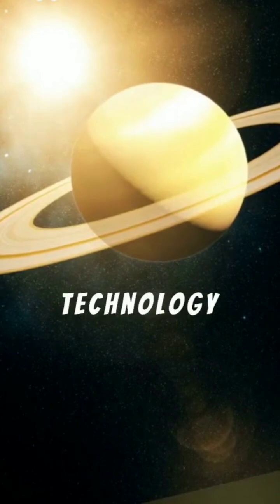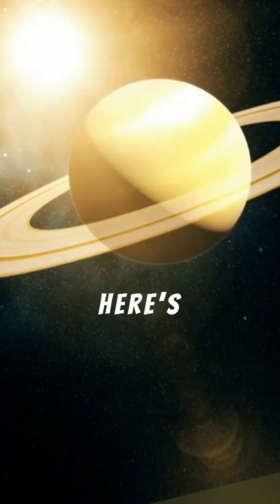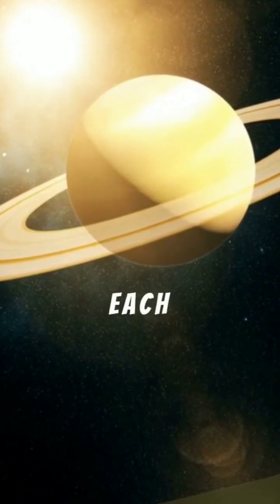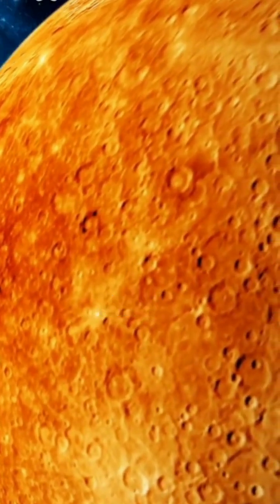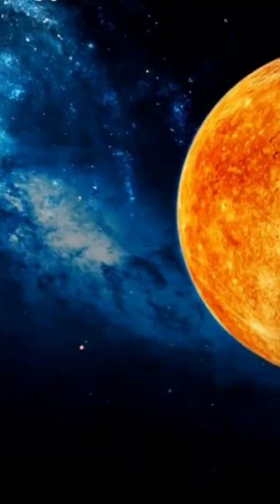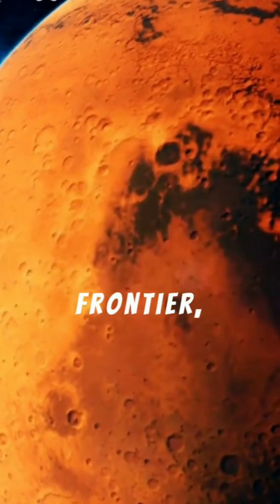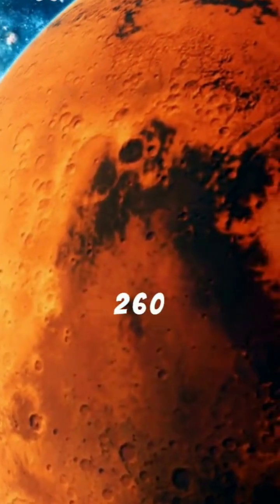Based on current technology and orbital mechanics, here's how long it takes to reach each planet from Earth. Mercury, a swift 40 days. Venus, approximately 90 days. Mars, our next frontier, about 260 days.